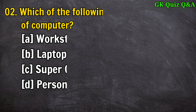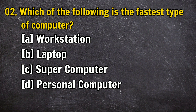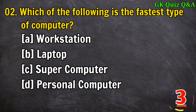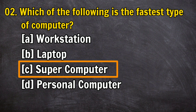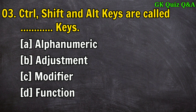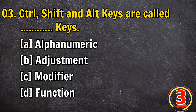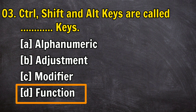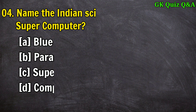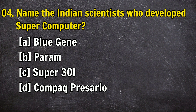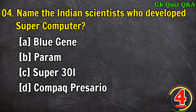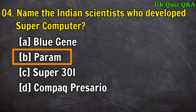Question 2: Which of the following is the fastest type of computer? Answer C: supercomputer. Question 3: Control, Shift, and Alt keys are called what keys? Answer D: function keys.